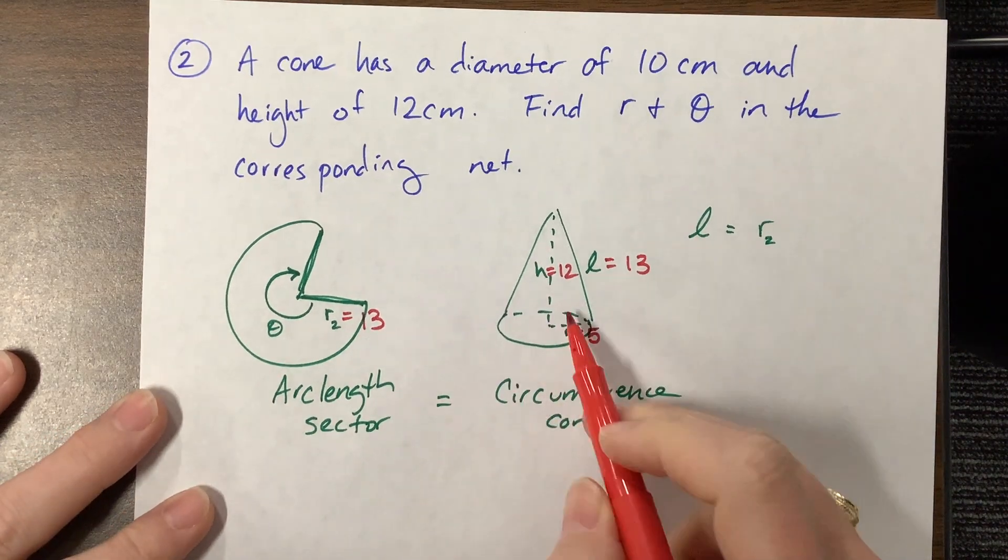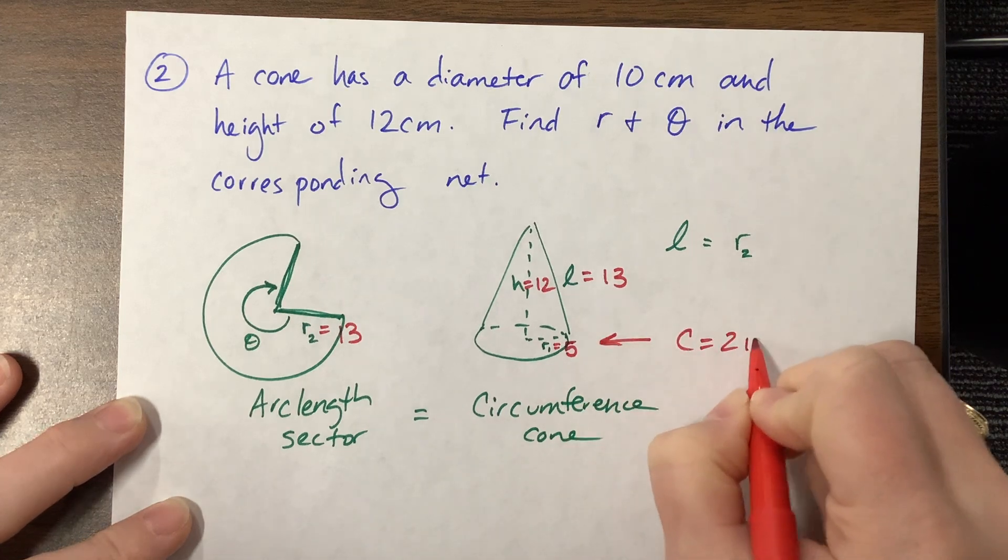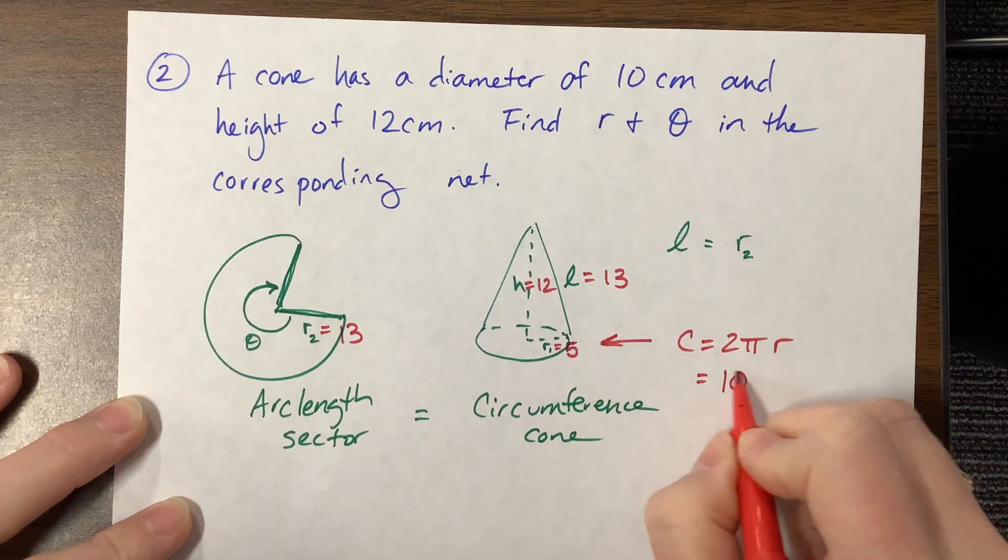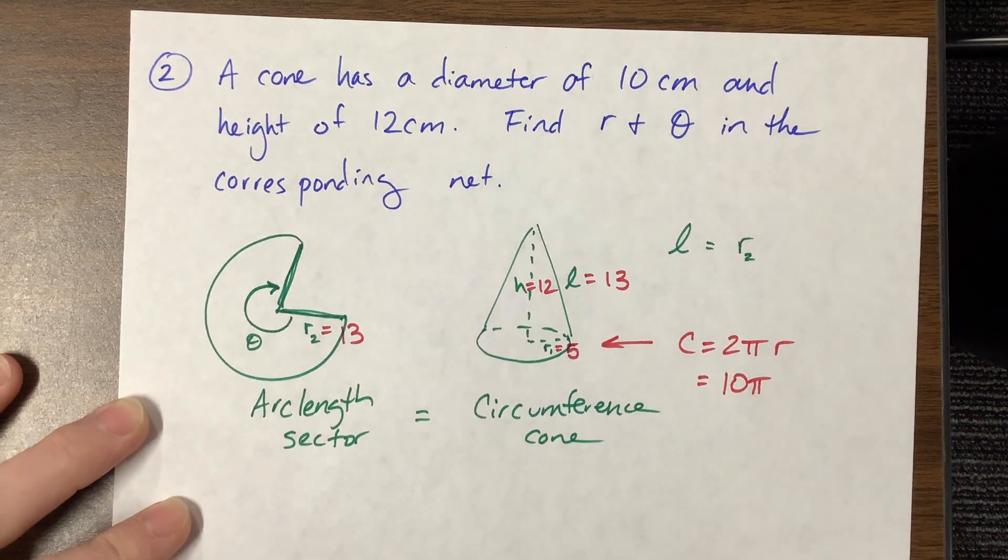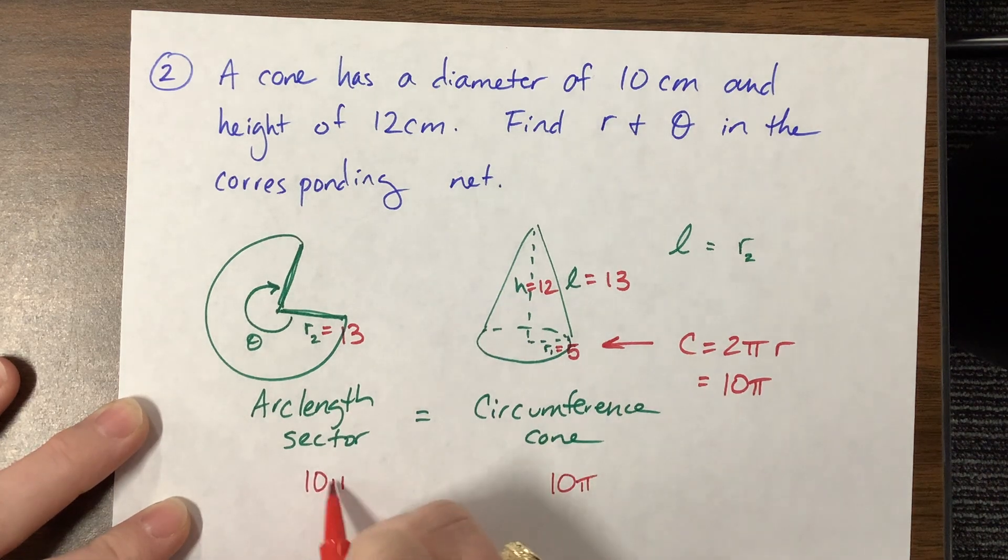So now circumference is equal, the circumference right here circumference is equal to 2 pi r, which our r was 5. So 5 times 2 is 10. So this has a circumference of 10 pi, which means, so since this is 10 pi, that means that the arc length is 10 pi.